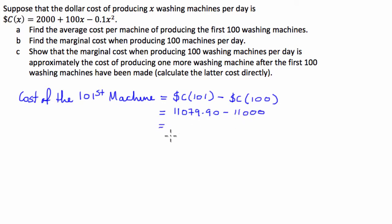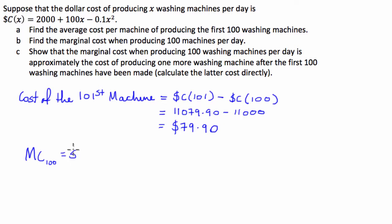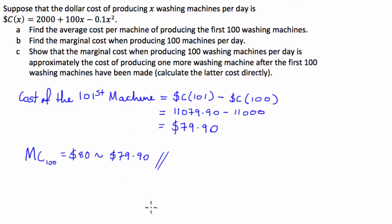When I do this subtraction, I get $79.90. From here, we have to show that this is approximately equal to the marginal cost at 100 machines per day. The marginal cost at 100 machines is equal to $80, and this is approximately equal to $79.90. So we've shown that the marginal cost when producing 100 machines — which is $80 — is approximately equal to the cost of producing the 101st machine, which is $79.90.